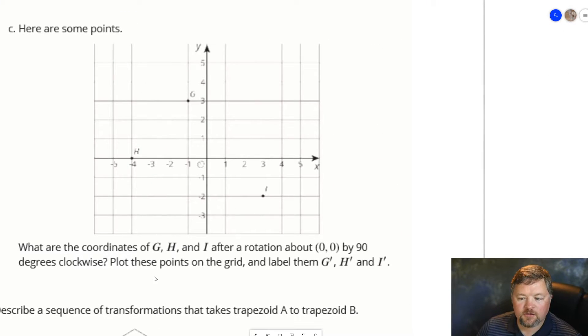Okay, here are some points. What are the coordinates of G, H, and I after a rotation about 0, 0, rotation about the origin, 90 degrees clockwise. Plot these points on the grid and label them G', H', and I'.